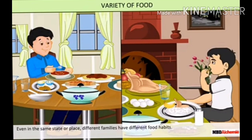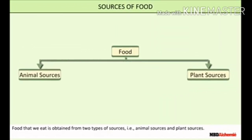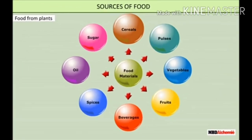Now, sources of food. Our foods are obtained from either plants or animals. So we can say there are two main sources of food: plants and animals. If we talk about food obtained from plants, we can group these food materials into seven main categories: cereals, pulses, vegetables, fruits, beverages, spices, oil, and sugar.